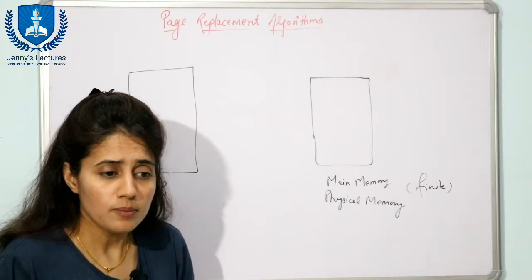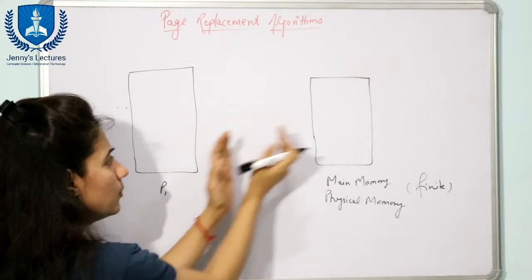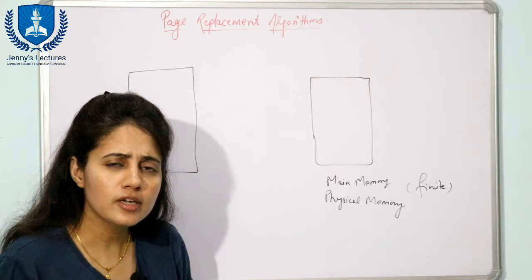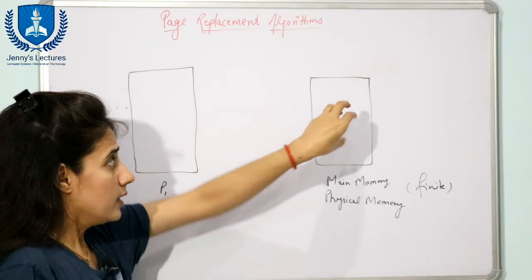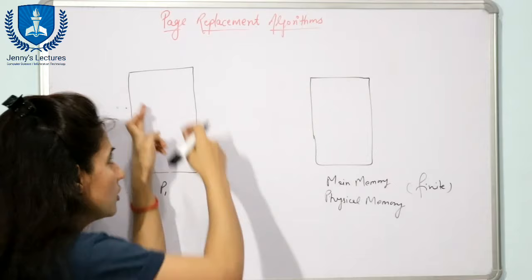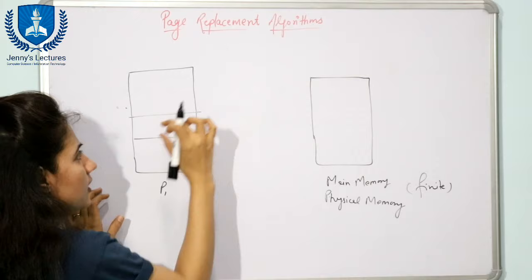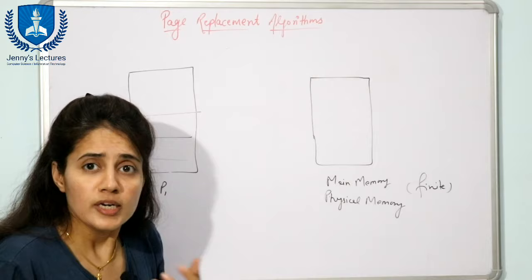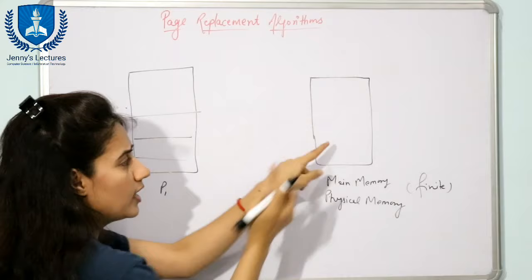Or maybe it is possible — rather than loading the complete process into main memory, is it possible to load only some part of the process? Because when the CPU is executing a process, it is not executing the complete process at once. Maybe the CPU is executing only one particular part, so it is better to load only that required part into main memory rather than loading the entire process.